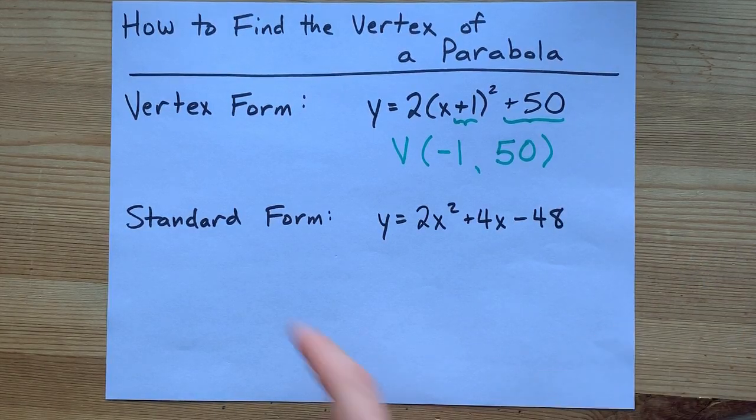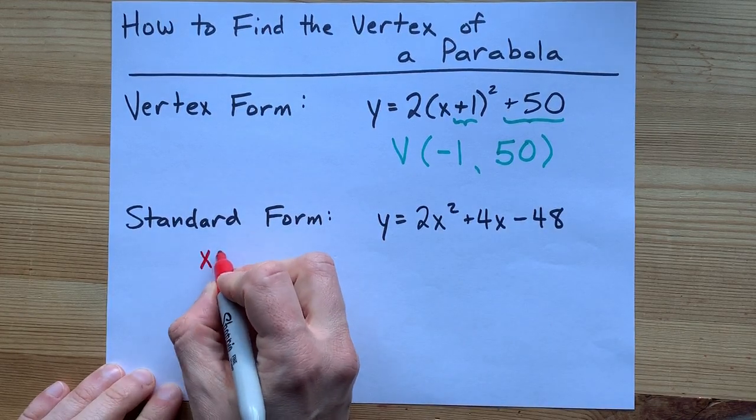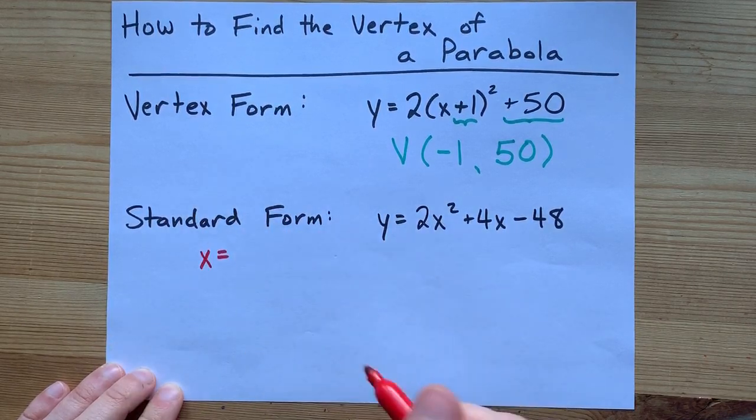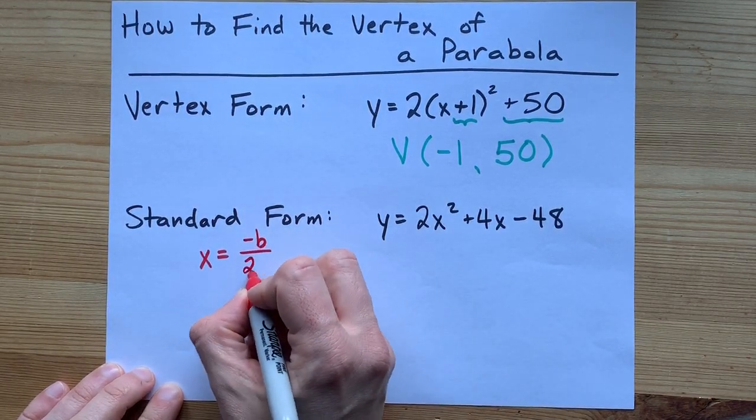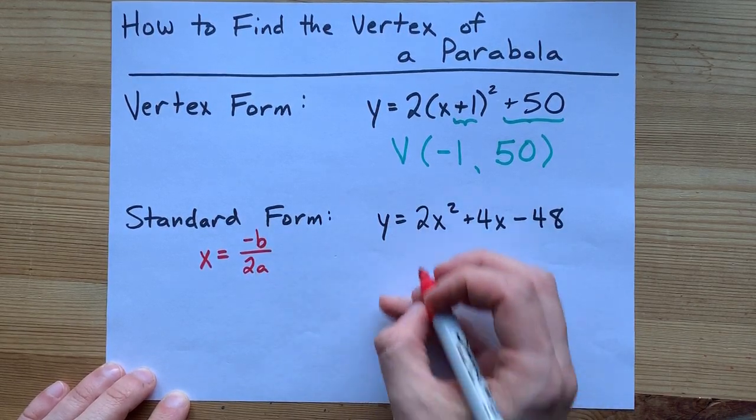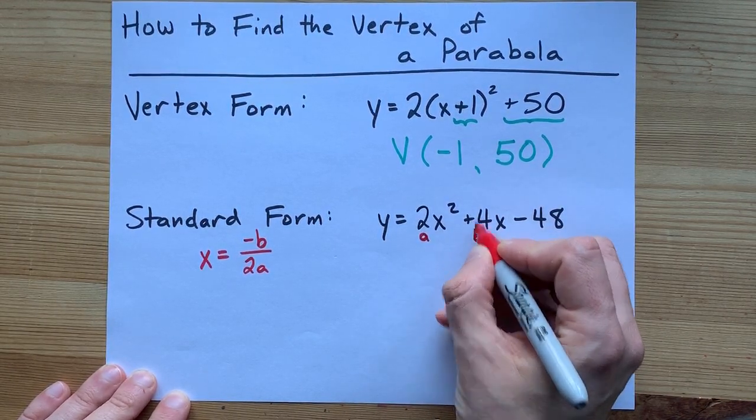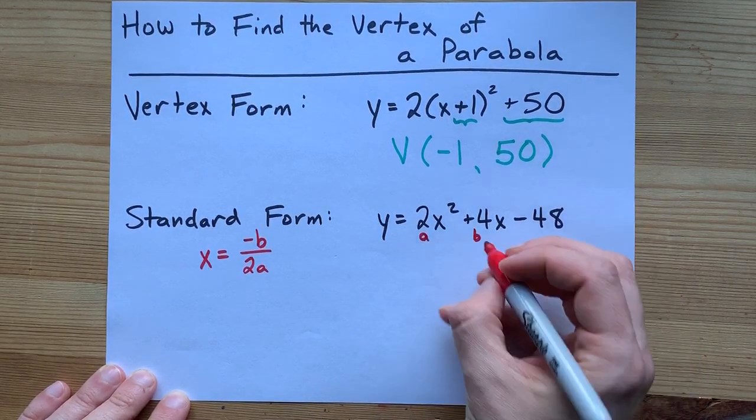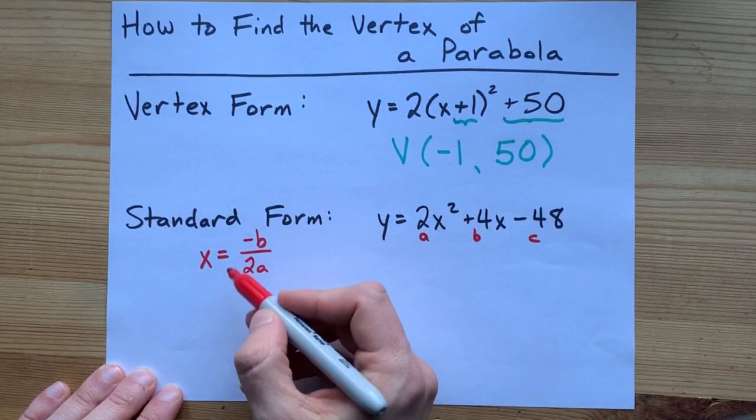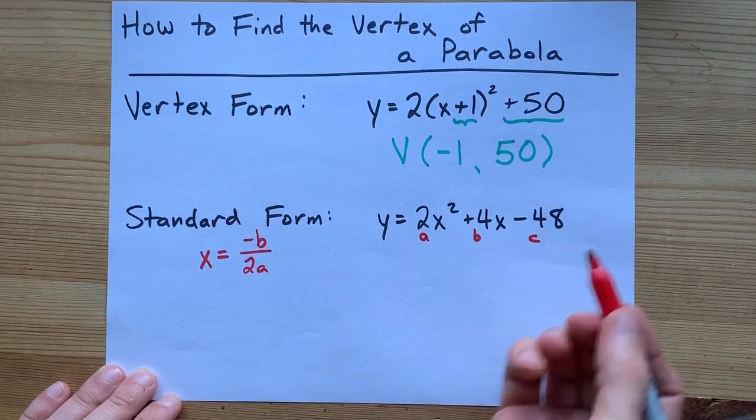Now, to find it from standard form requires a little more finesse. There's a shortcut I can give you. x of the x-coordinate of the vertex, or the axis of symmetry, is negative b over 2a. Now, to understand that, you have to know that the a value is the number in front of x squared, the b is the number in front of x, and the c is the number at the very end without any x's on it. Now, I know c isn't here, but you'll probably end up seeing it later in your course or whatever.